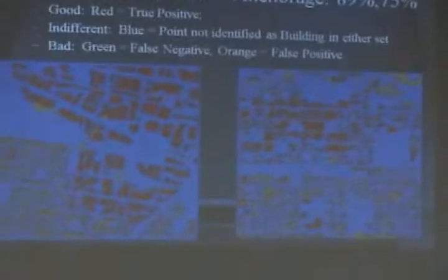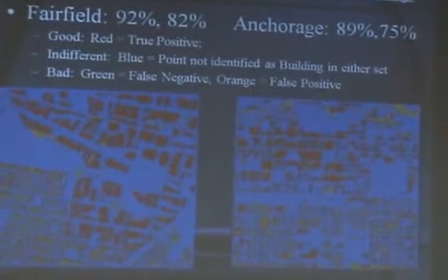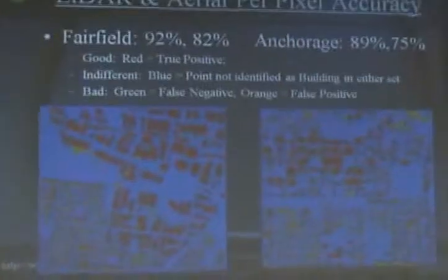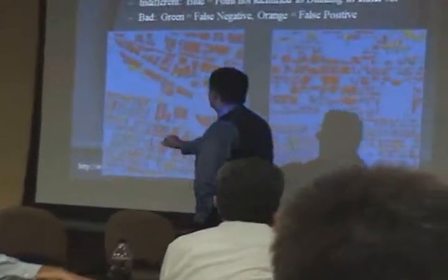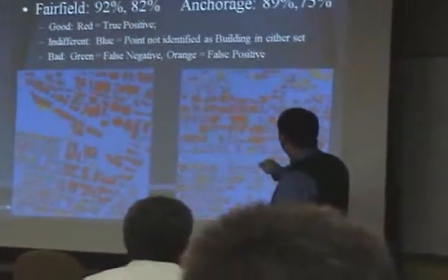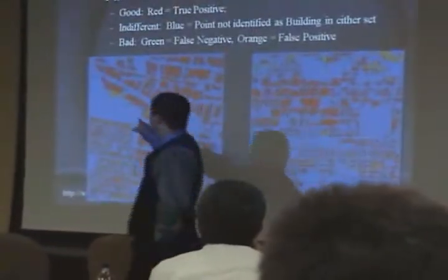We evaluated the algorithm's results on a per-pixel level for how it resolved one of the classic buildings. Red indicates true positives — identified as building in both cases. Blue is indifferent — neither set identified it as building. The false negative is green and the false positive is orange. For the most part, we have some false negatives for smaller residential buildings, but we do detect some of those. For false positives, we sometimes have trouble with vegetation adjacent to buildings.